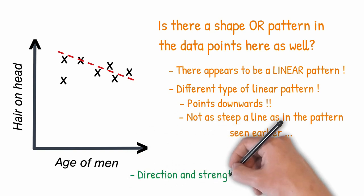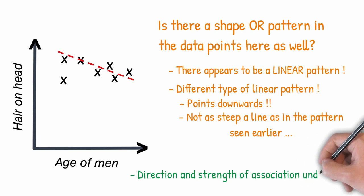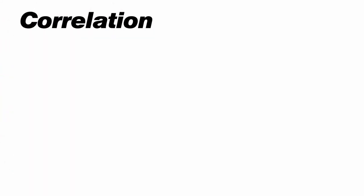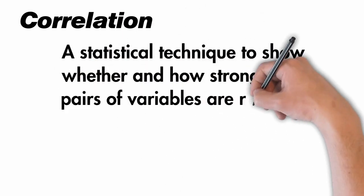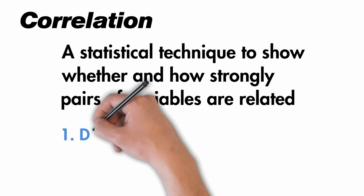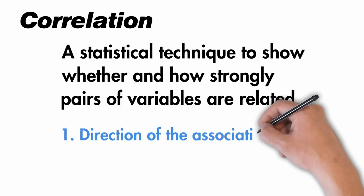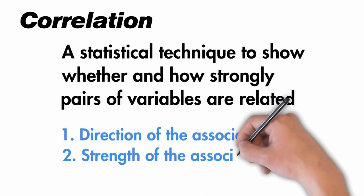When we are studying the direction and strength of an association between variables, we are looking at correlation. We therefore in statistics define correlation as a statistical technique to depict whether and how strongly a pair of variables are related with each other. Association is defined by the direction of association and the strength of the association.